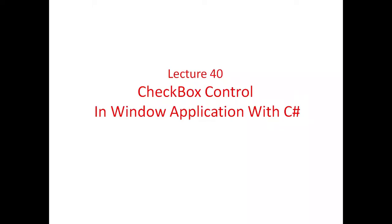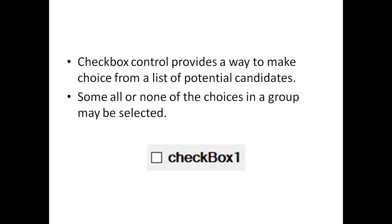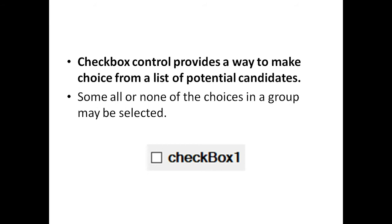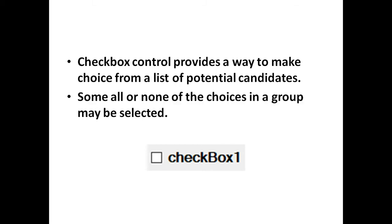Here we will see the checkbox control in a Windows application. Checkbox control provides a way to make a choice from a list of potential candidates. Some, all, or none of the choices in a group may be selected. This is the basic layout of a checkbox control.